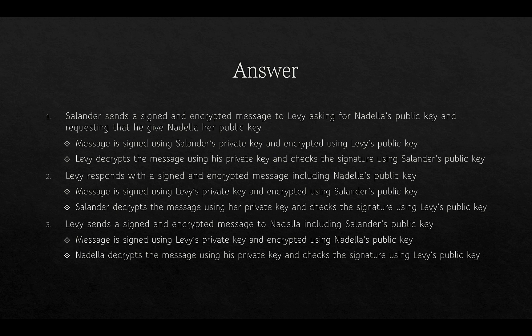Salander still wants to check the message, because even though it's a response it could have come from some other party. Levy then sends a signed and encrypted message to Nadella including Salander's public key. The message is signed using Levy's private key and encrypted using Nadella's public key. Nadella decrypts the message using his private key and checks the signature using Levy's public key. At that point both Salander and Nadella have each other's public keys and can communicate with each other. There wouldn't have been any point in Salander sending a message directly to Nadella because he would have had no way to trust that the public key she sent was in fact her public key. So they trust getting it from Levy in a secure way.